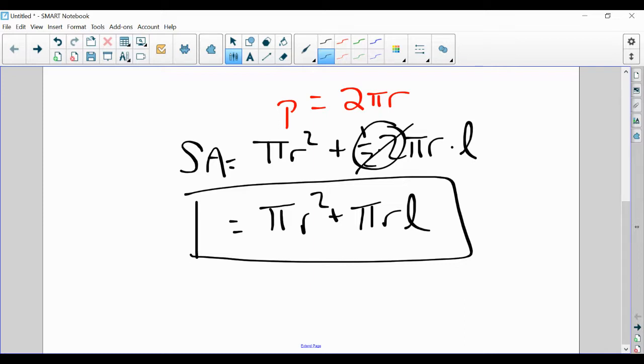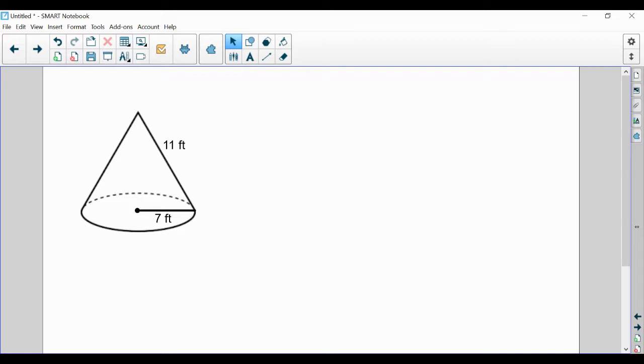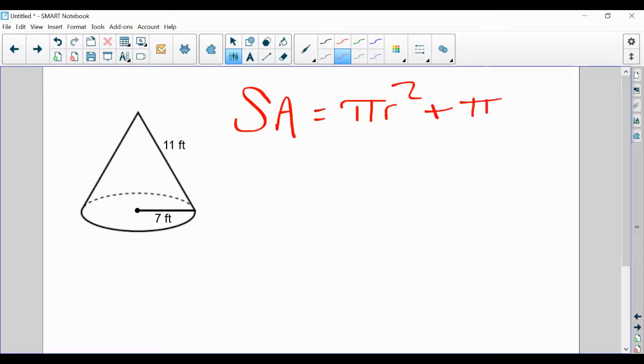Okay, let's use it in two different ways. For this first problem, we are given a radius of seven and a slant height of 11. So it looks like we have everything we need. I'm going to start by writing out the formula, pi r squared plus pi r L.